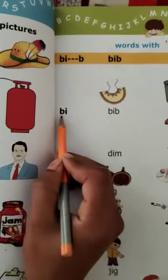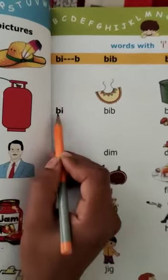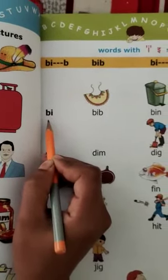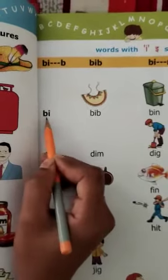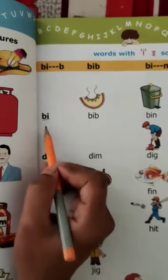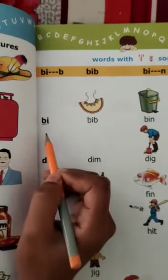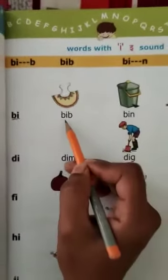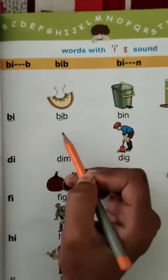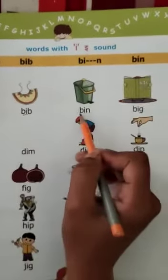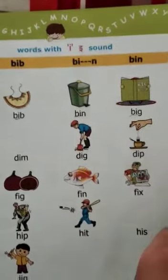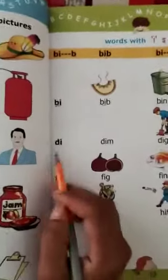B says B, B. E says E. So B-E: B. What is the together sound? Now see here: Bib, Bin, Big. Okay, like this you read.